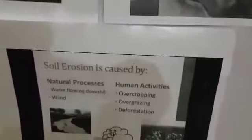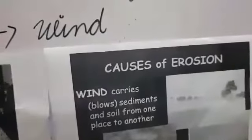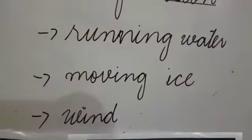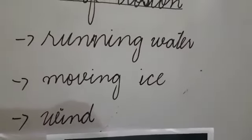There are different causes of erosion: wind, soil and the moving ice. The first one is running water. It is the cause of erosion.